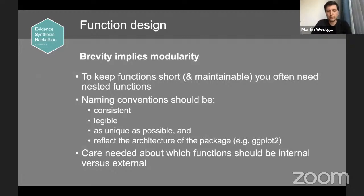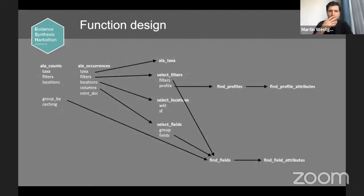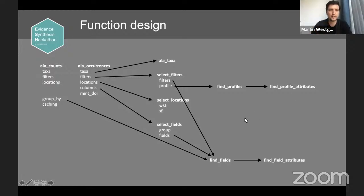My experience is that it's often useful to have a naming convention that reflects that architecture. Just to show what I'm talking about: this is an architecture diagram for the same function I showed before. The new version is called ALA_occurrences, and there's another function called ALA_counts with similar arguments. Everything in bold is a function name, and everything indented underneath it is an argument to that function.